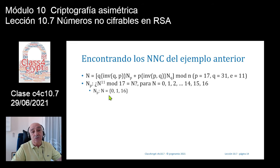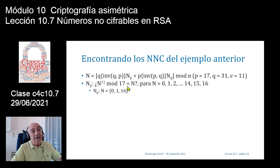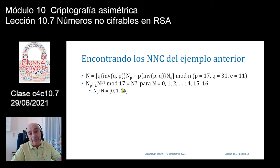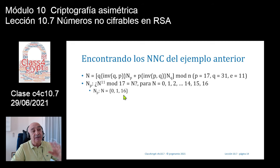Si os fijáis, los números obvios el 0 y el 1 van a ir en claro, evidentemente. Ahora no en un número compuesto sino en un número primo, P menos 1 elevado a X módulo P también me sale P menos 1, que es 16. Hasta aquí no hay ninguna sorpresa.